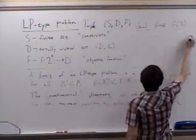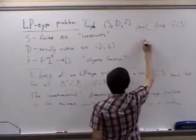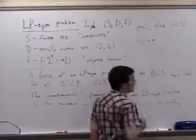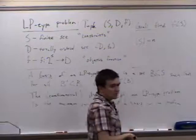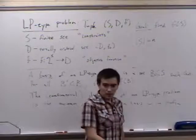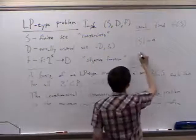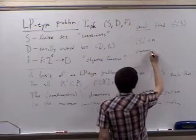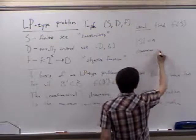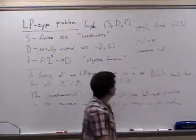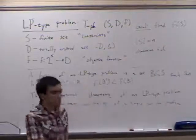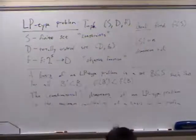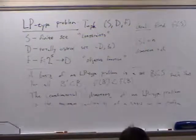The combinatorial dimension of an LP-type problem is the maximum cardinality of a basis for the problem. We'll omit 'combinatorial' when it's obvious we're talking about an LP-type problem. As a convention, we'll set the cardinality of the whole set S equal to N, and the dimension equal to D. These will match up with our intuitions for linear programming.